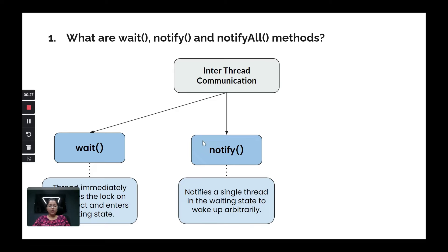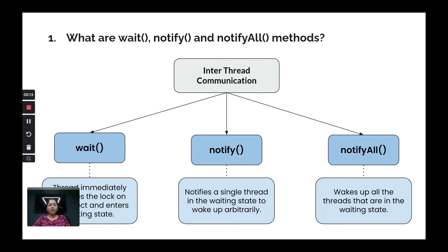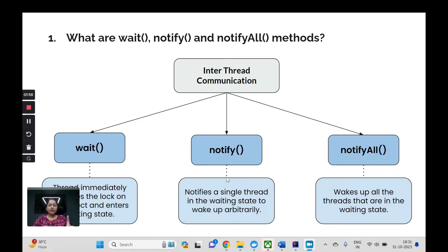With notify, a single waiting thread is awakened — it comes back to a runnable state. With notifyAll, all threads that are in the waiting state are notified. So there may be one thread or a bunch of threads waiting for some condition, and another thread has done its work and wants to notify the waiting thread.